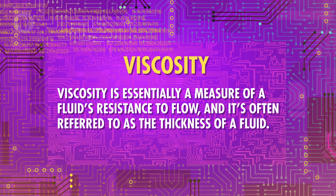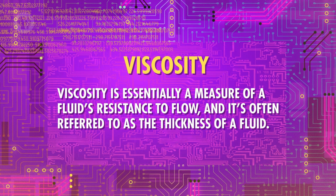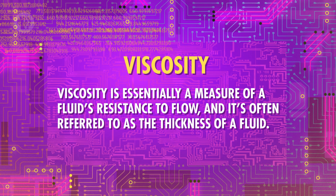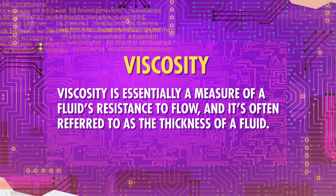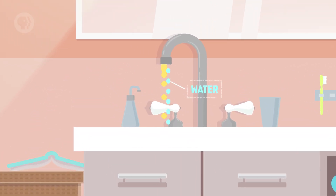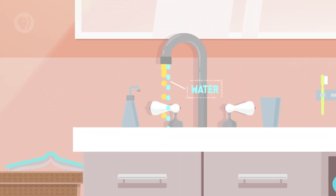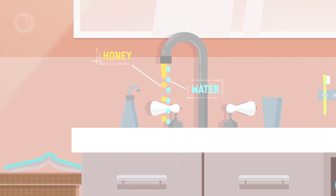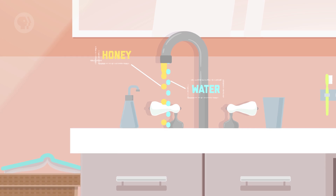But what if neither plate moved, and we had a pump driving the flow of the fluid between them? Well, the same no-slip condition would apply, so while the fluid moved, its particles at the surface of the two plates would stay stationary. But another thing we need to take into account is viscosity. Viscosity is essentially a measure of a fluid's resistance to flow, and is often referred to as the thickness of a fluid. For example, water has a low viscosity since it flows pretty easily, while honey and other thick, sticky fluids have a much higher viscosity.